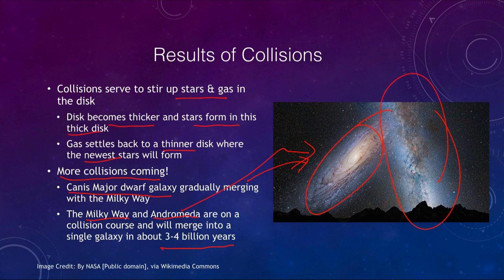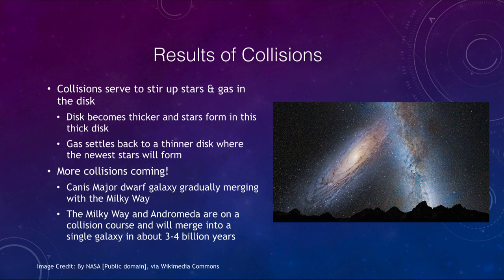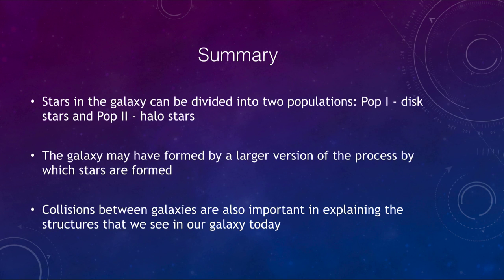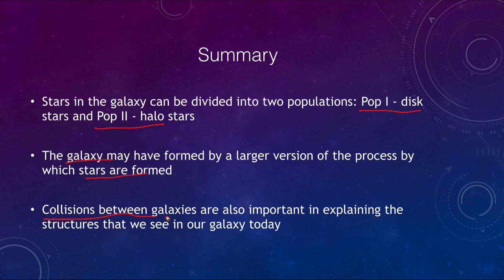Let's finish up with our summary. We talked about two different types of stars: population one stars in the disk and population two stars in the halo. We think galaxies could have formed by a larger version of the process by which stars formed, but also that collisions are very important — collisions between galaxies are really important for explaining the structures we see in our galaxy today.